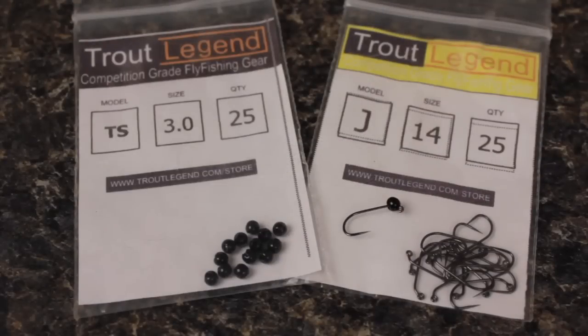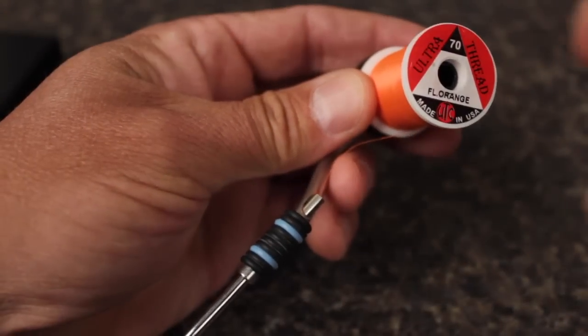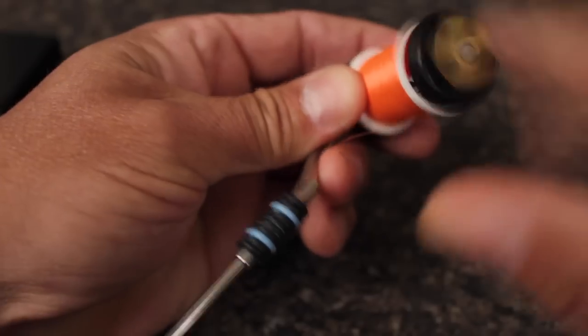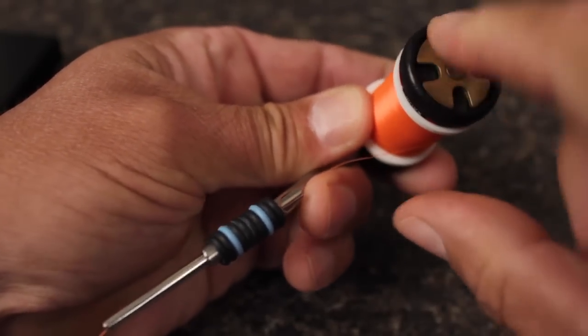For a hook, I'm going to use a Trout Legend Model J in a size 14, along with a black 3 millimeter slotted tungsten bead. I've chosen UTC 70 denier in fluorescent orange for the thread that'll be used to tie the fly and form a hotspot collar.